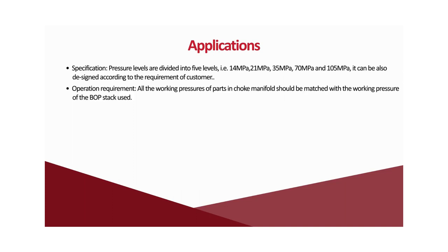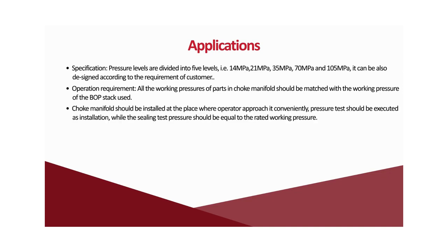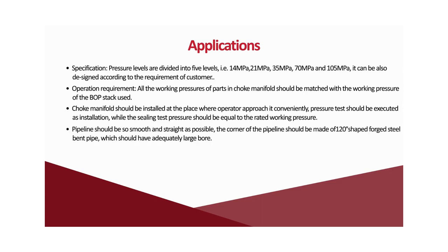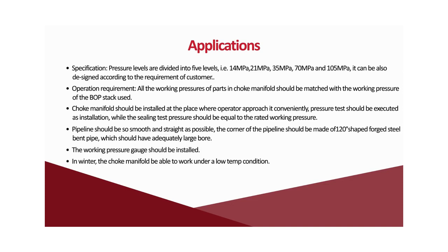Operation requirements. All working pressures of parts in the choke manifold should be matched with the working pressure of the BOP stack used. The choke manifold should be installed in a place where the operator can approach it conveniently. Pressure tests should be executed upon installation, with the ceiling test pressure equal to the rated working pressure. Pipeline should be as smooth and straight as possible, and corners should be made of one 20-degree shaped forged steel bent pipe with adequately large bore. In winter, the choke manifold should be able to work under low temperature conditions.